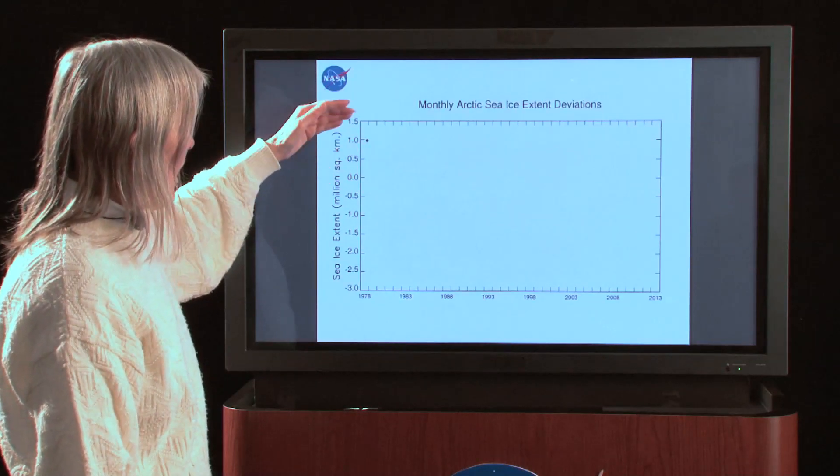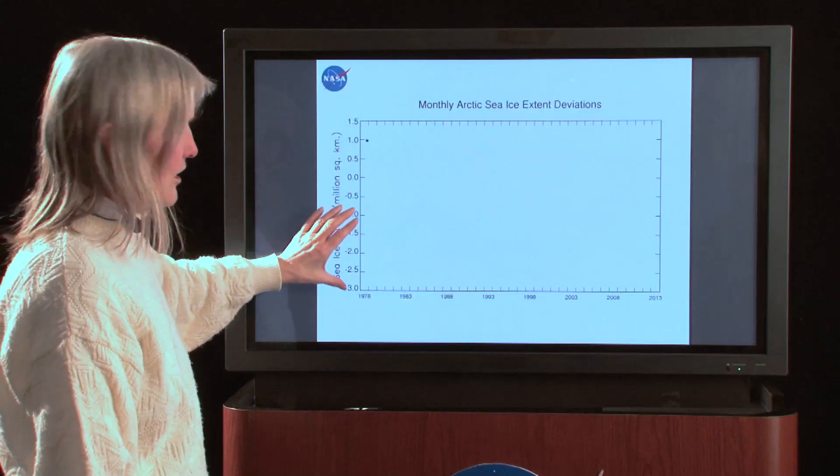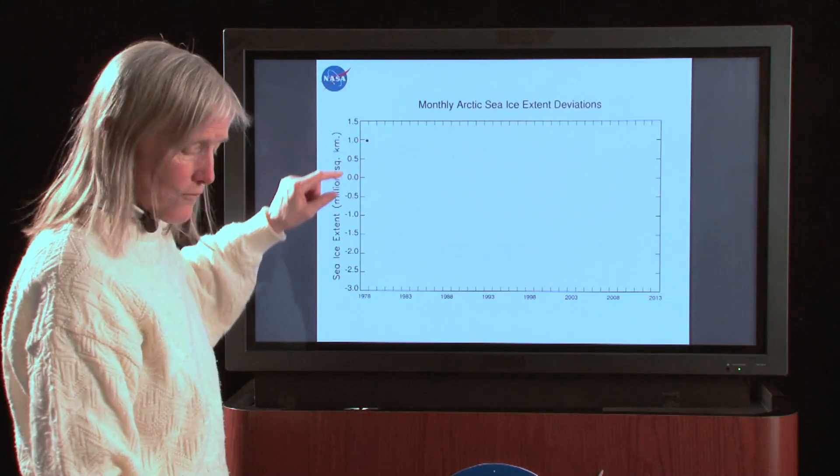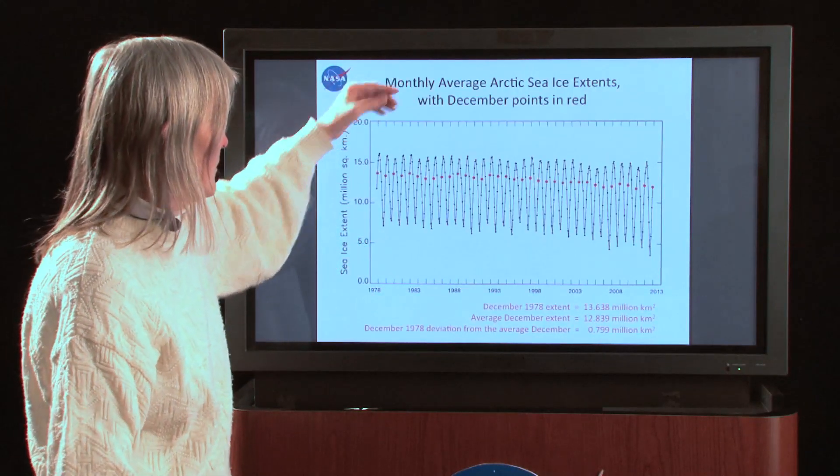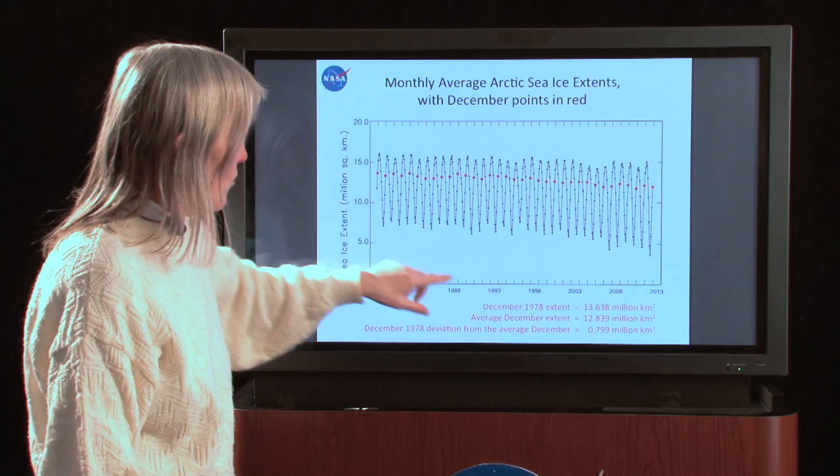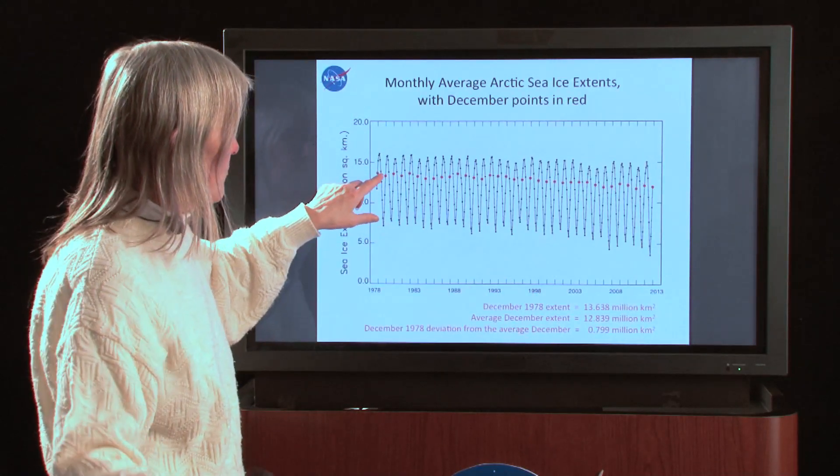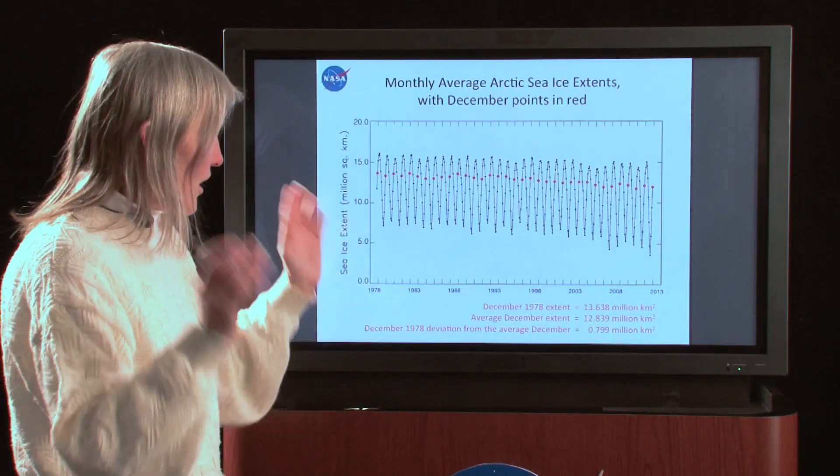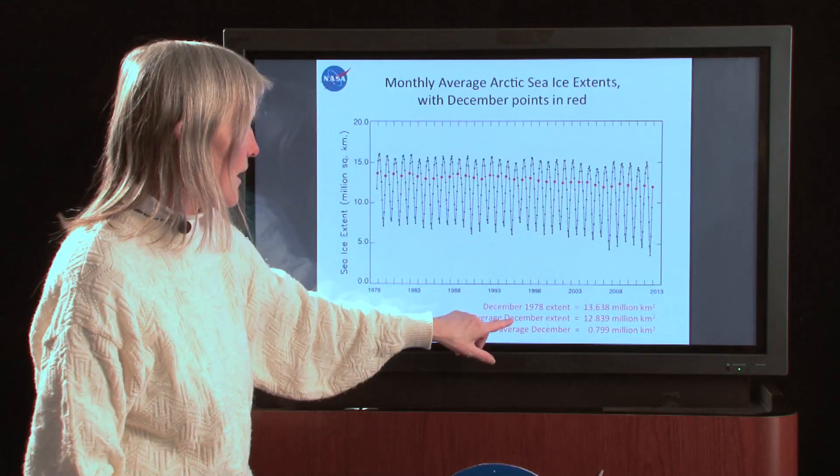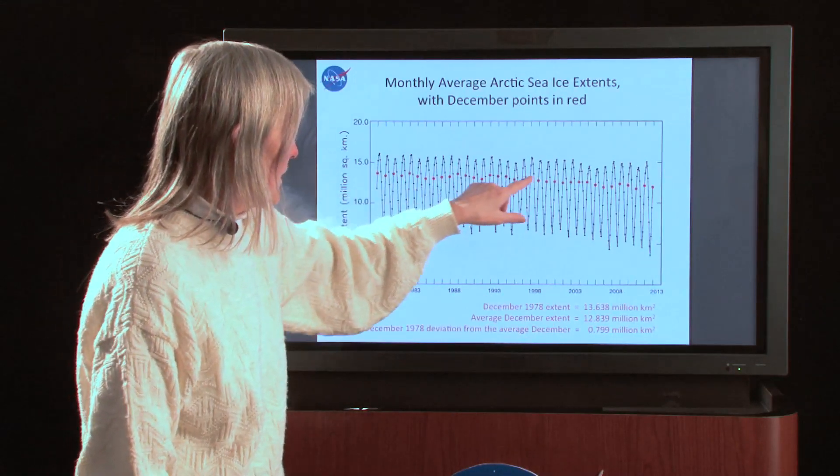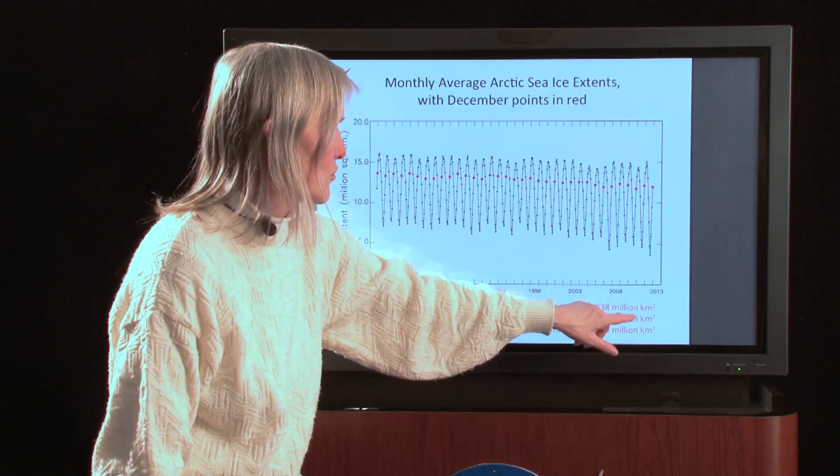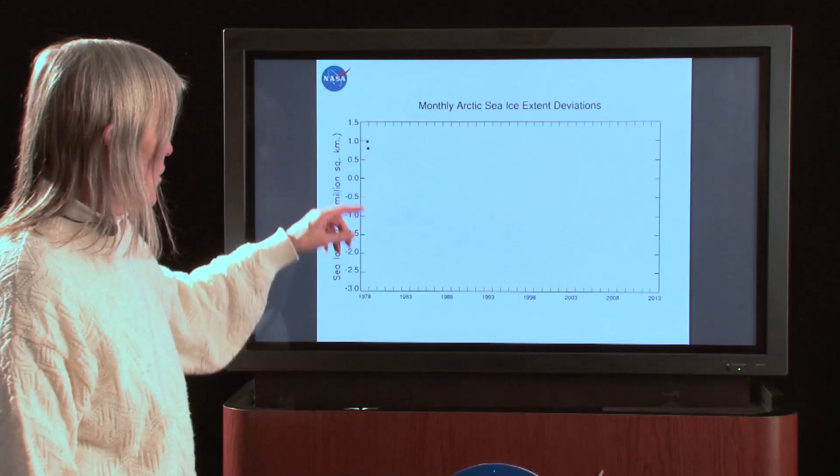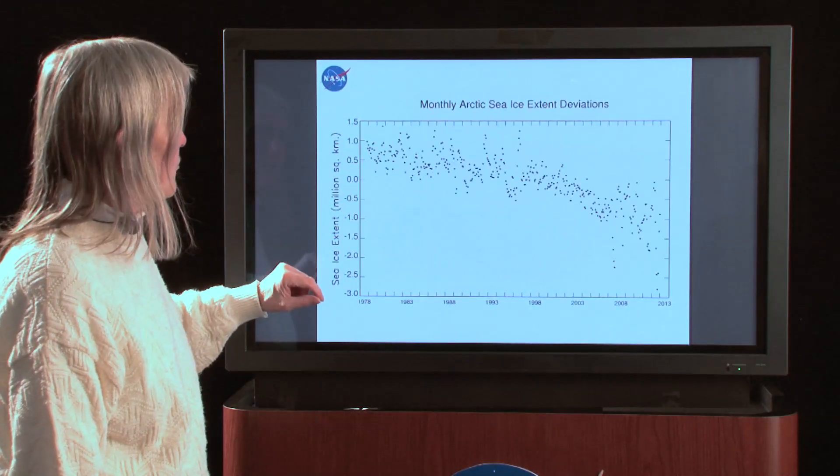Now we're going to plot things, some of which are going to be positive, some of them are going to be negative, because some will be above the average and some below. So we've got a scale now that includes negative numbers. So we plot our first point. We move on to the next data point, which is December of 1978. We take December of 1978, and now we compare that only with all the other Decembers. We're not comparing it with March and June, July, or any other month, just December. And we subtract the average of all the Decembers. So all those points average them up, and we get 12.839 million square kilometers. And we subtract and we get 0.799 million square kilometers. We go ahead and we plot that point.